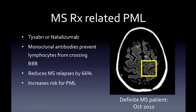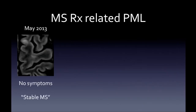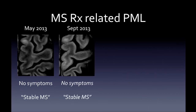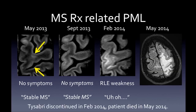MS treatment-related PML is the more relevant concern here — classically in MS patients on natalizumab, a monoclonal antibody that prevents lymphocytes from crossing the blood-brain barrier, reducing MS relapses but increasing PML risk. In this fellowship case, a definite MS patient showed stable scans in 2013 with no symptoms, then in 2014 developed right lower extremity weakness. Lesions became more confluent, ultimately revealing widespread confluent PML — and unfortunately the patient passed.